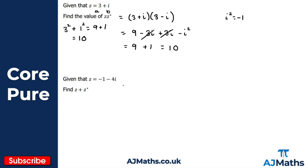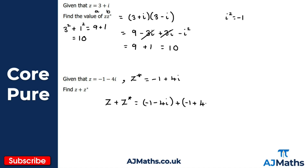For this next example, we have the complex number z equal to minus one minus four i, and we're asked to find z plus its complex conjugate. The complex conjugate of minus one minus four i is minus one plus four i.